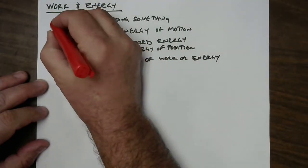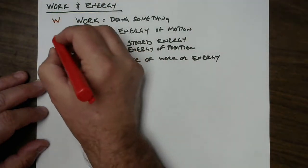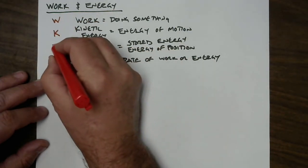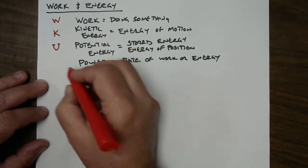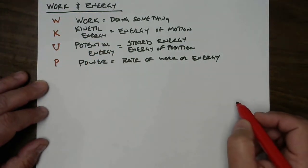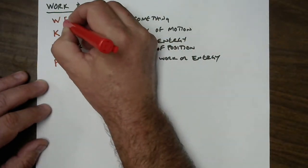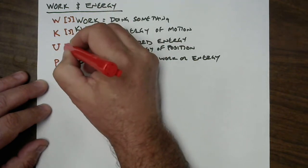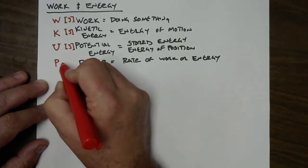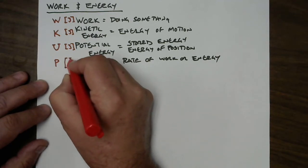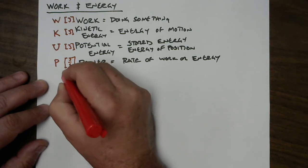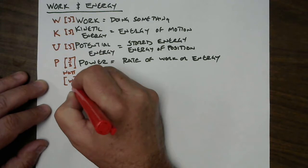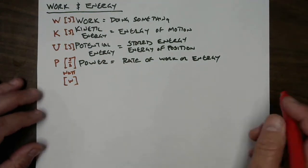So the symbol that we're going to use for work is going to be W. The symbol we're going to use for kinetic energy is K. The symbol for potential energy is an uppercase U. And the symbol for power is an uppercase P. All three of these are going to be measured in a unit called joules, abbreviated with the letter J. Power, however, because it's a rate, is going to be measured in joules per second, which is also known as a watt, abbreviated with a W. Now let's get right to it.